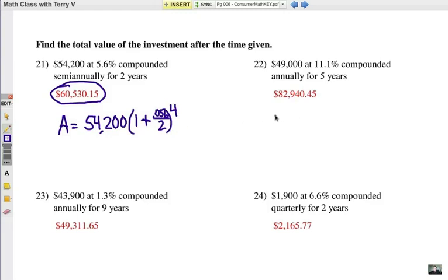Number 22. You're going to take your principal, 49,000, and inside your parentheses, you're going to have one plus. The interest rate is 11.1, so it's .111. How many times per year are you going to compound it annually? So, it's once. You don't actually have to do any dividing there at all. Now, if it's compounded once a year for five years, then it'll be compounded five times.